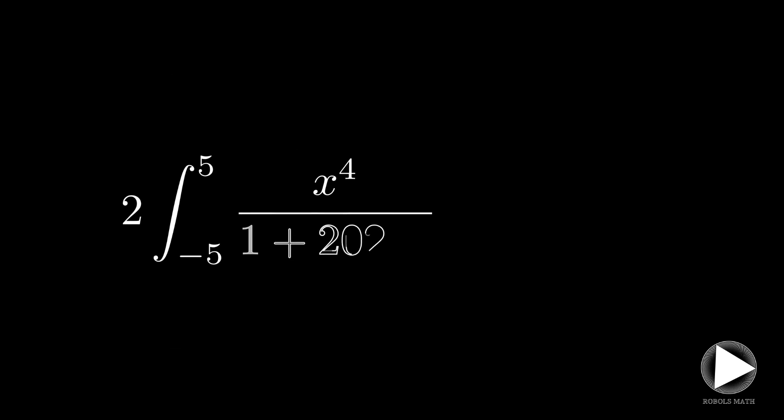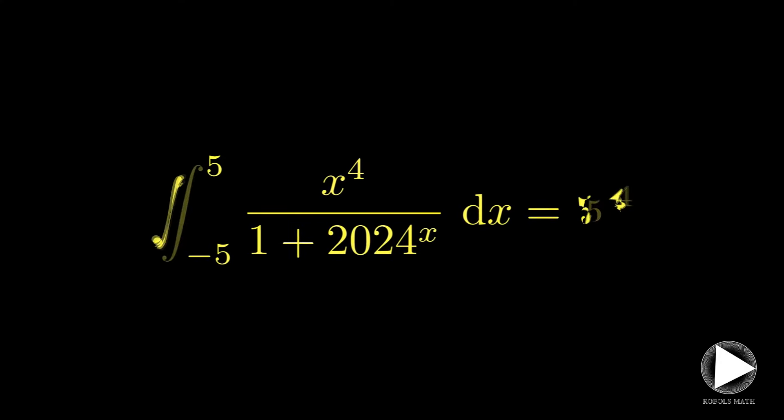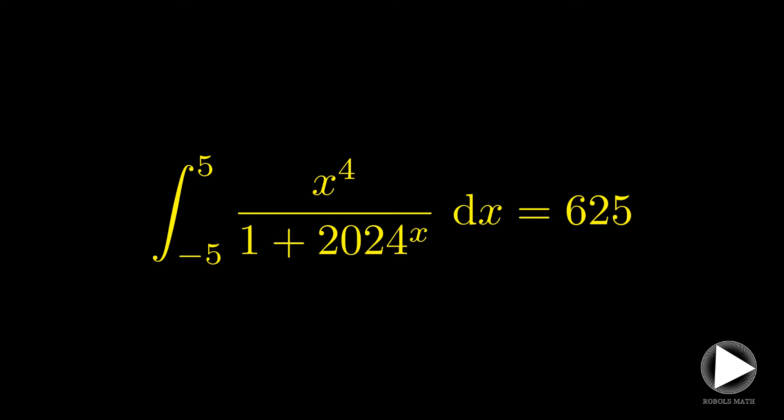Since this is equal to 2i, i must be equal to 5 to the 4th, or 625. And that's the final answer.